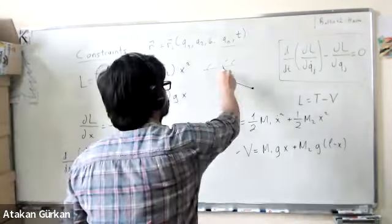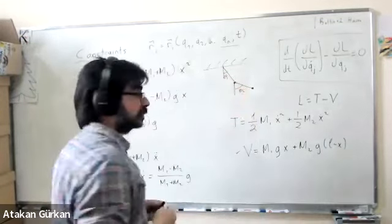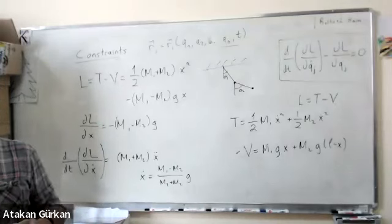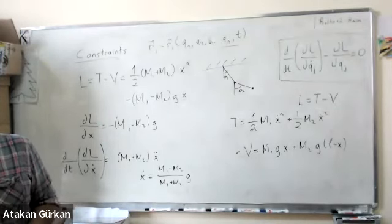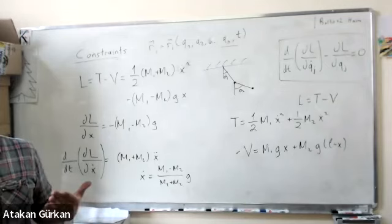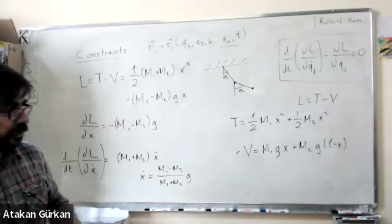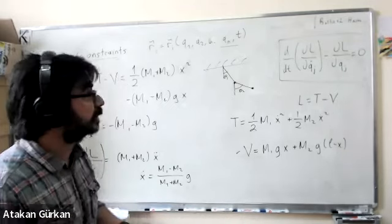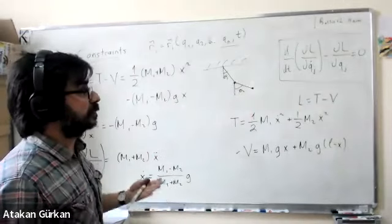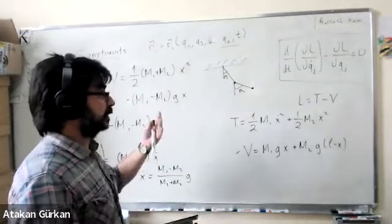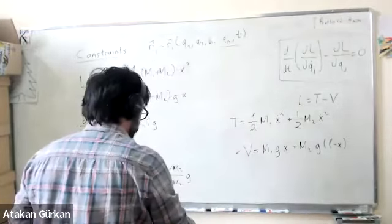For a double pendulum, using the Lagrangian with the two angles θ1 and θ2 is straightforward. With the Newtonian approach it's much more complicated. And for something with a hundred masses — a continuum — Newton is practically intractable, while the Lagrangian approach remains manageable as long as you use the correct generalized coordinates.